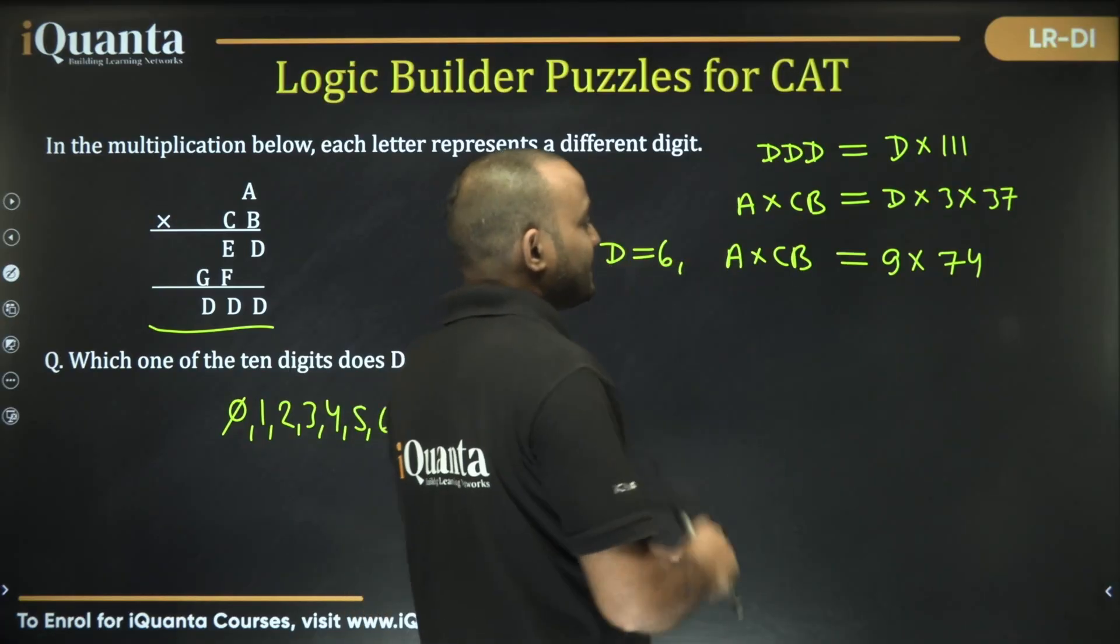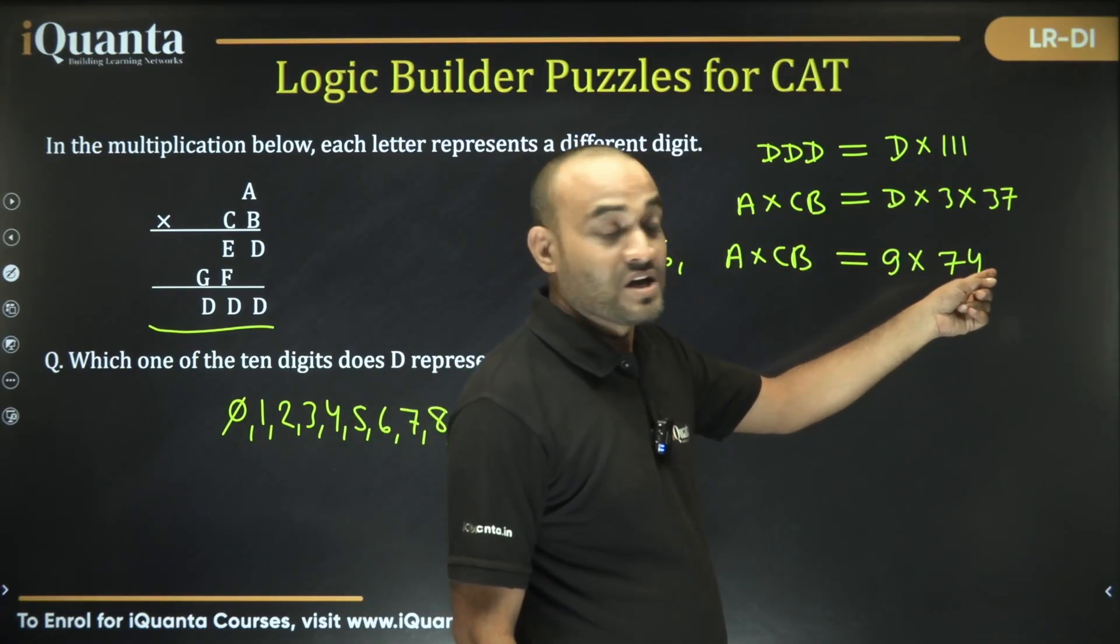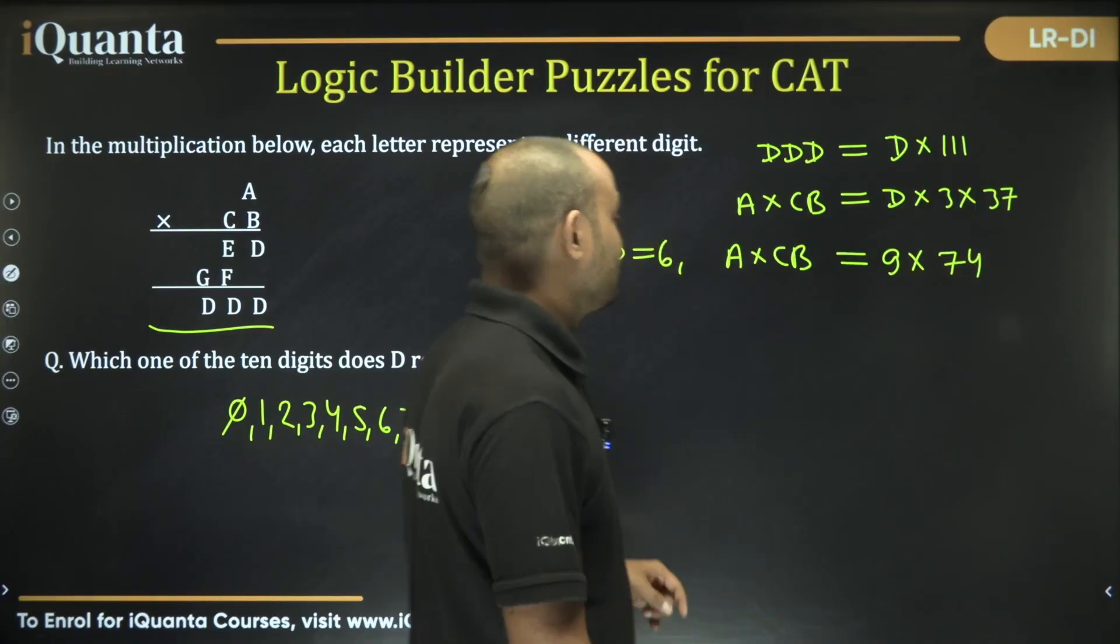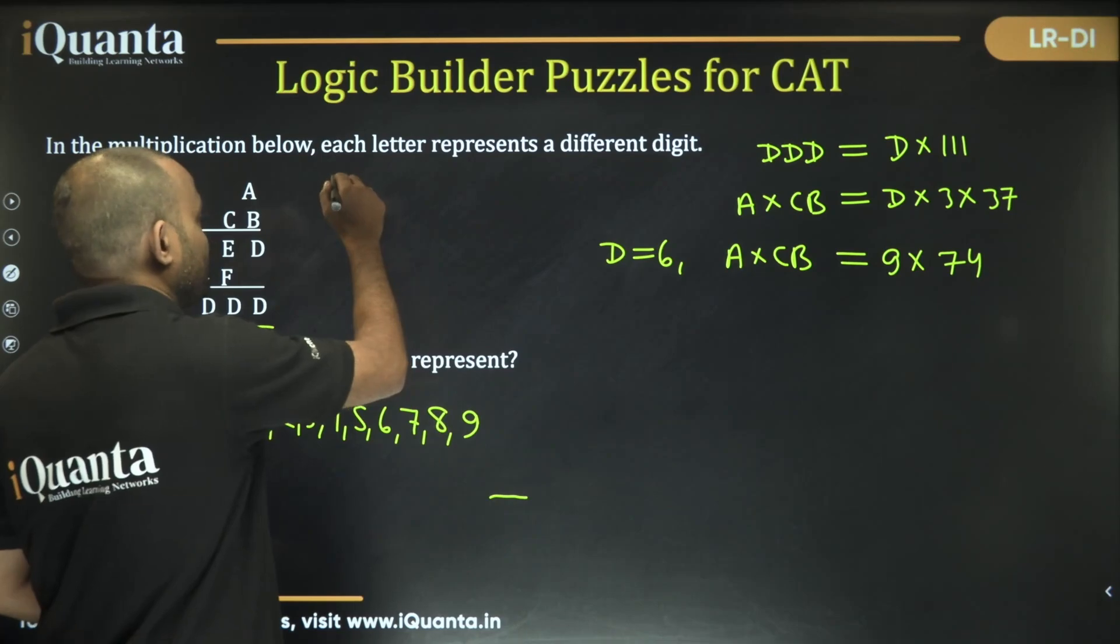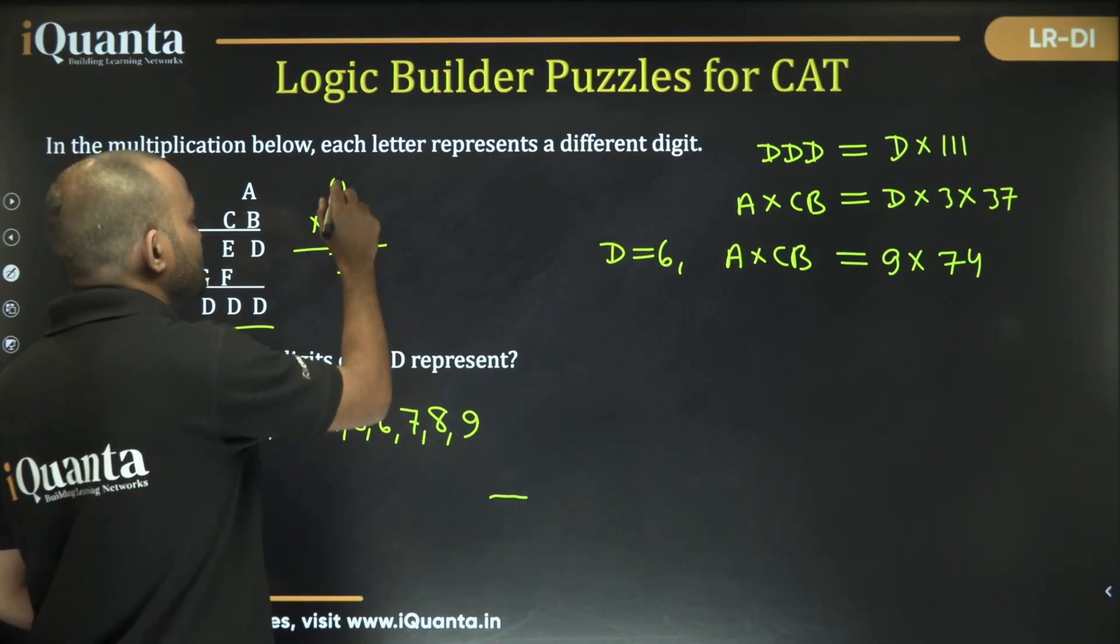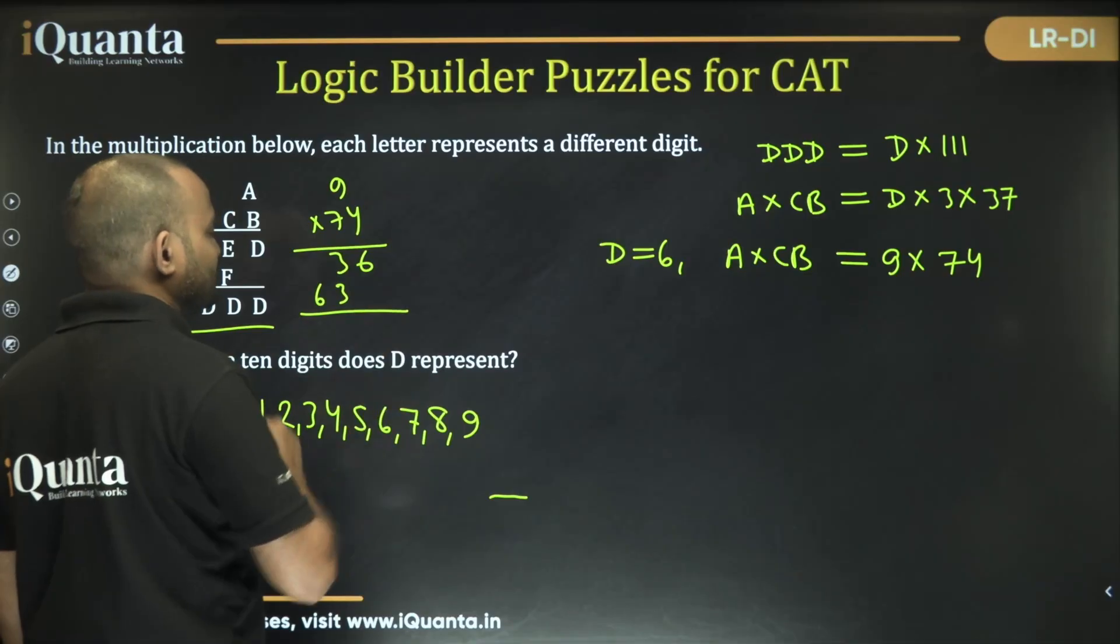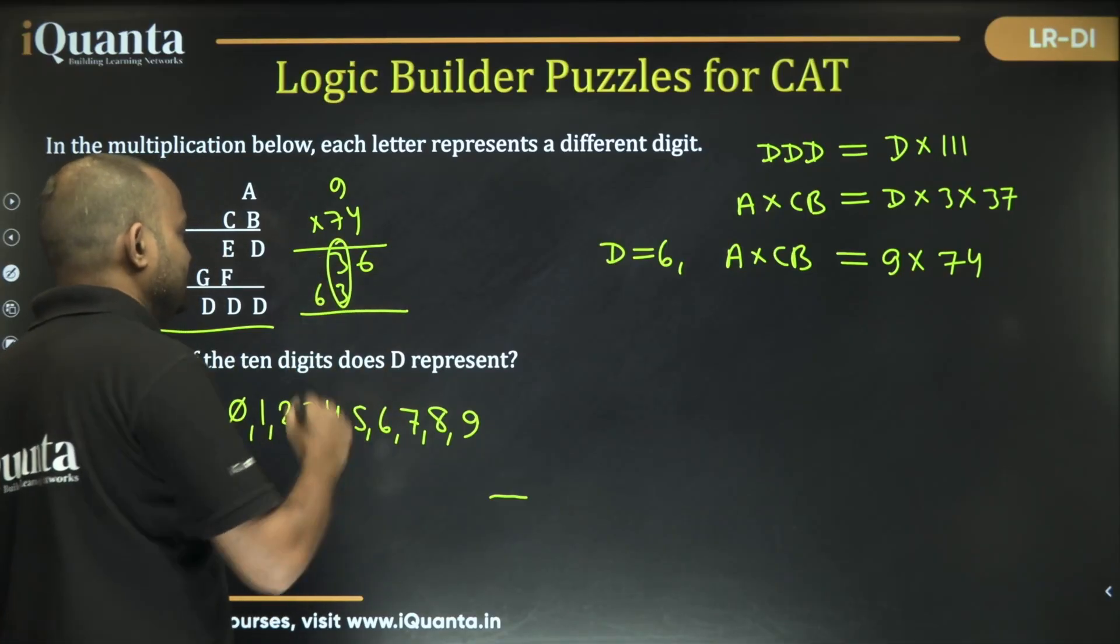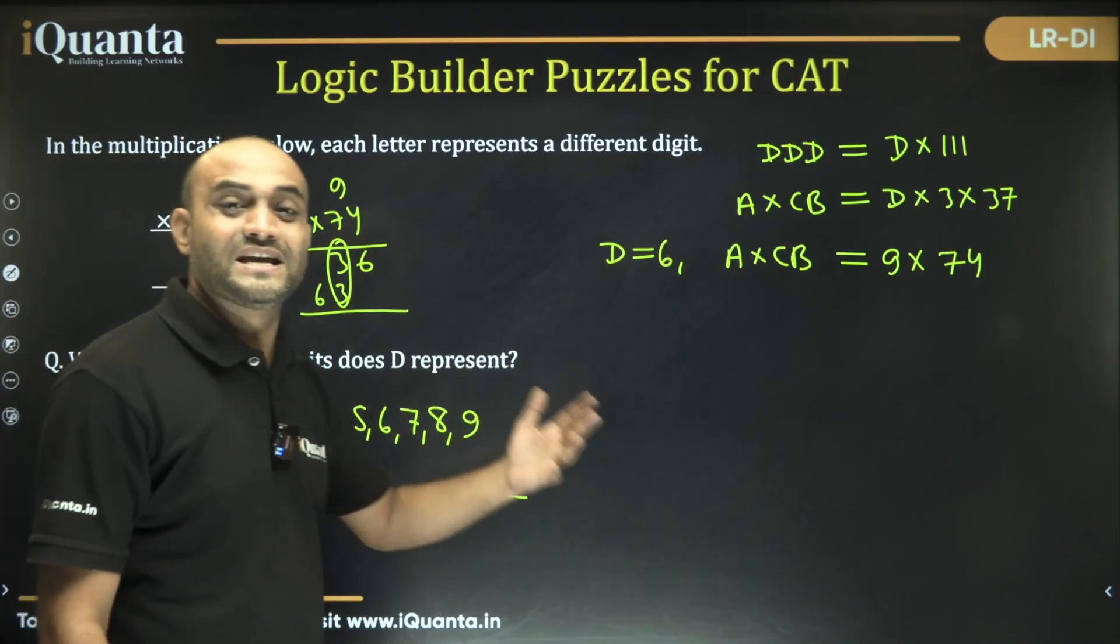Now is that our answer? Is D is equal to 6? Let's check it. So 9 into 74: 9 into 4 is 36, 7 into 9 is 63. That is not possible. It says all of these are distinct; here we are getting E and F as same digits.